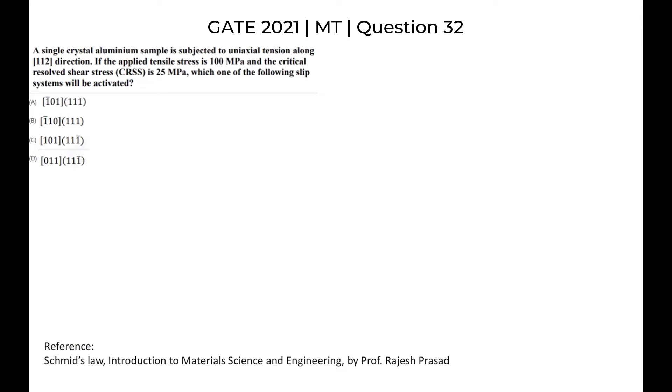Hello all, this is one more question from GATE Metallurgy 2021. The question says a single crystal aluminum sample is subjected to uniaxial tension along 112 direction. If the applied tensile stress is 100 MPa and the CRSS critical resolved shear stress is 25 MPa, which one of the following slip systems will be activated?